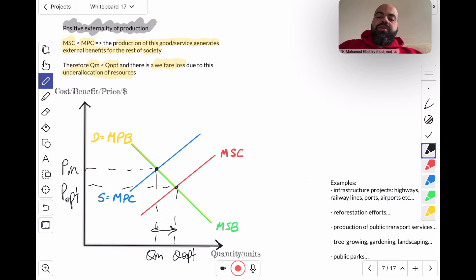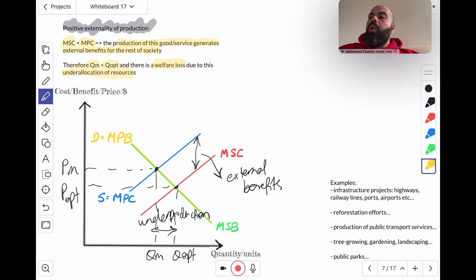Now you can see the distance between QM and QOpt is an underproduction due to an under allocation of resources to the production of this product. The vertical distance between the MSC and the MSB, that's the size of the positive externality, or the size of the external benefits. And to find the welfare loss, you have to find a triangle that points from QM to QOpt. So you can see here, this triangle that points from QM to QOpt, that is your welfare loss.